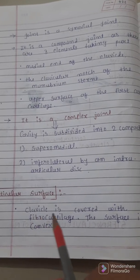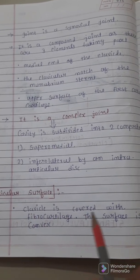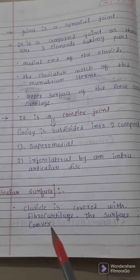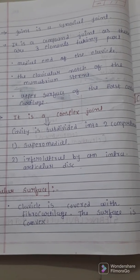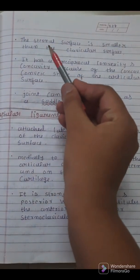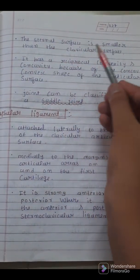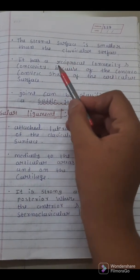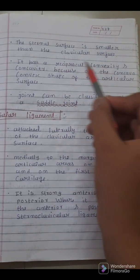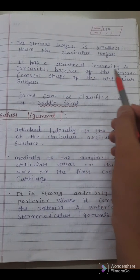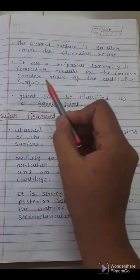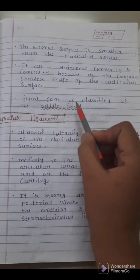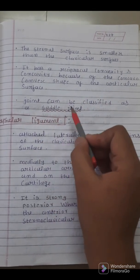Regarding the articular surface: the clavicle is covered with fibrocartilage and the surface is convex. The sternal surface is smaller than the clavicular surface. There is a reciprocal convexity and concavity because of the concave-convex shape of the articular surface, so the joint can be classified as a saddle joint.